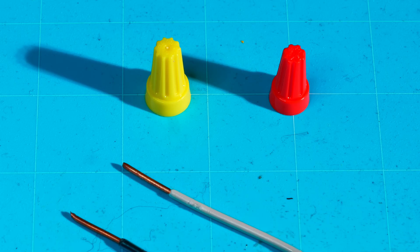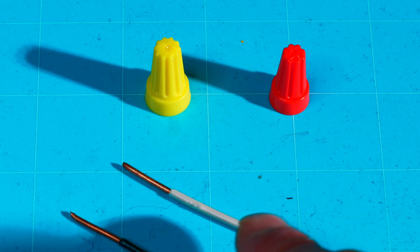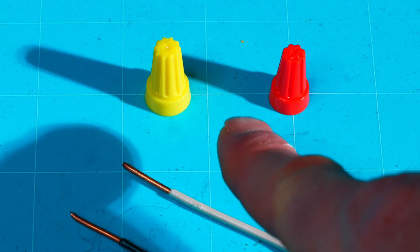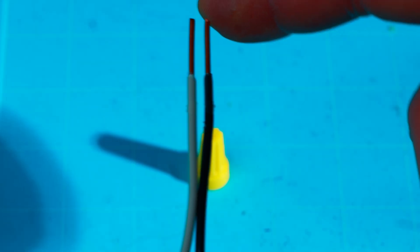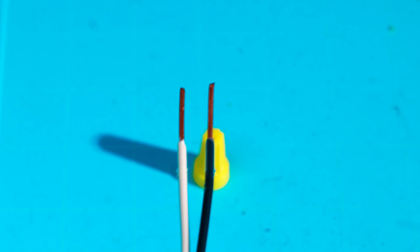So you really have to figure out which wire nut is going to work best for your situation. Now, with these 14-2 wires from my Romex, I can safely use either one of the orange or the yellow. The next step is figuring out, should I pre-twist my copper conductors before using the wire nut?